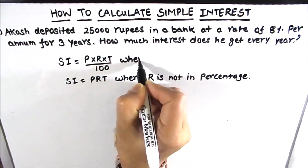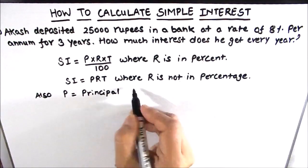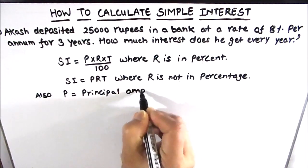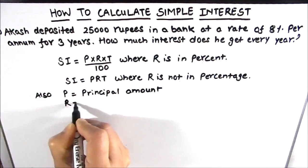P is the principal amount, which is the amount we deposited. R is the rate of interest, and T is the time in years.